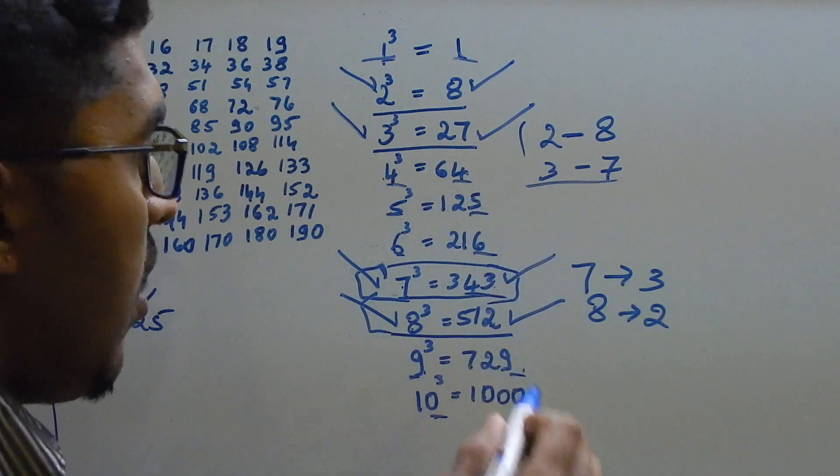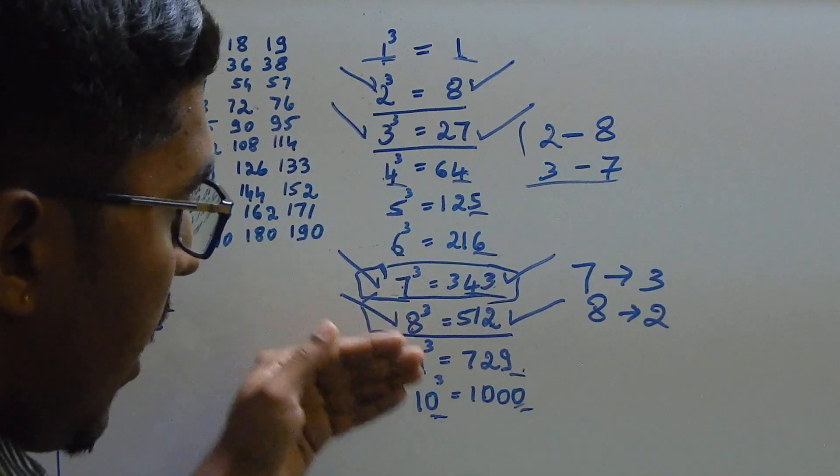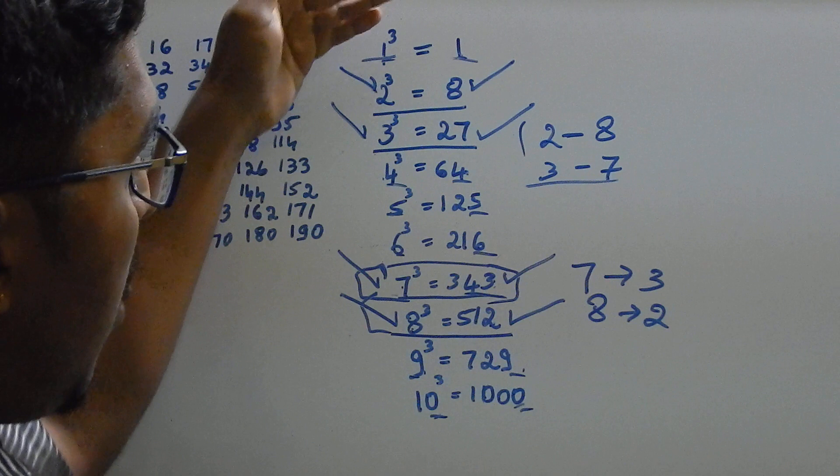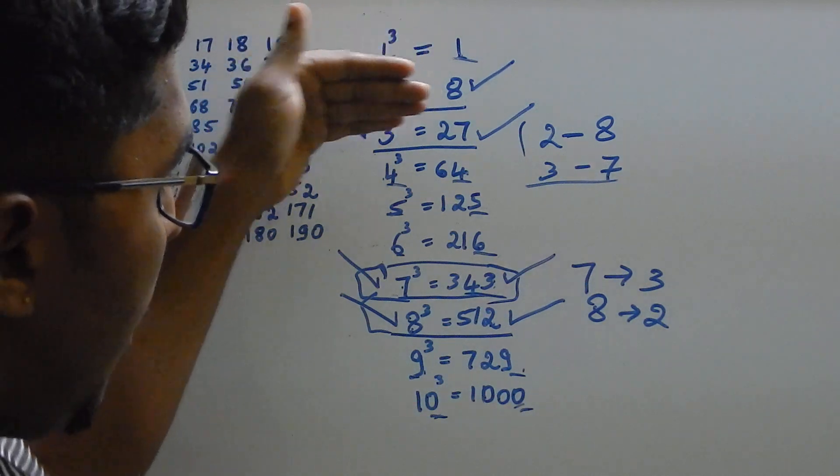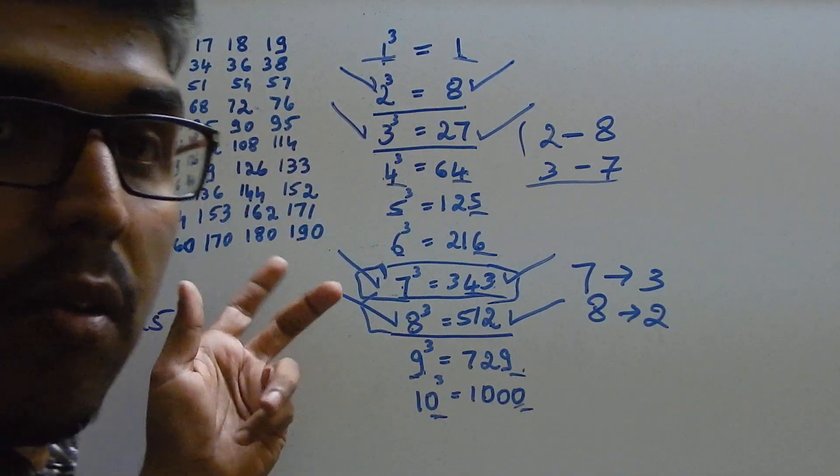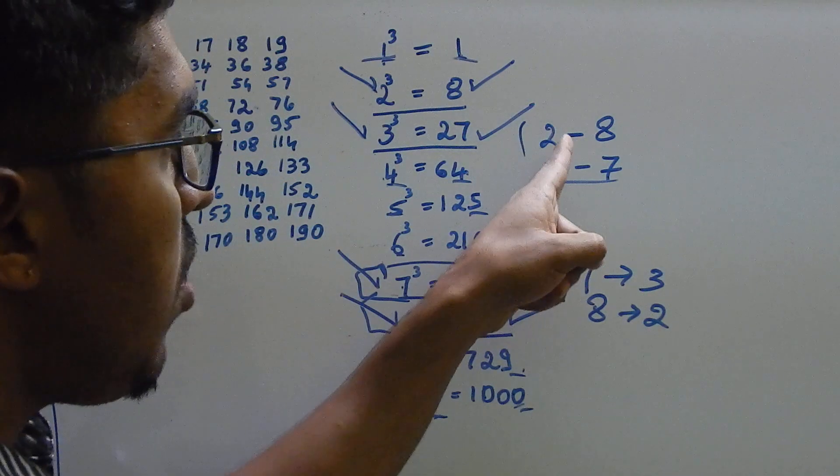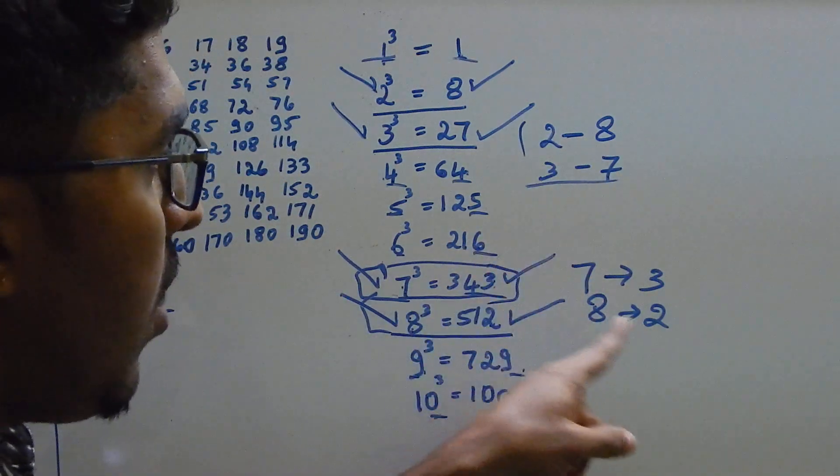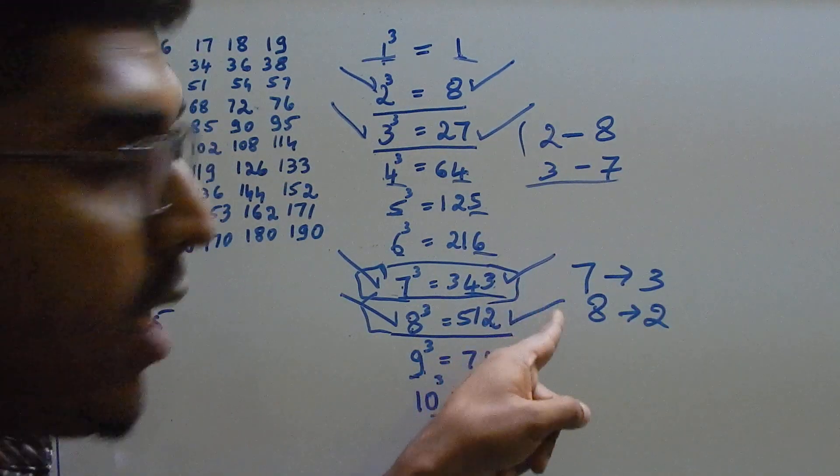4 cube, 4 is the unit digit. 4, 5, 6, 9, 0. And only 2, 3 and 7, 8, the value differs. You should remember 2, 8, 3, 7. 2, 8, 3, 7 in this order.